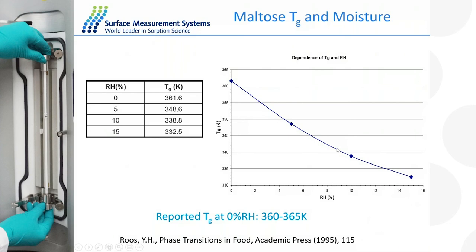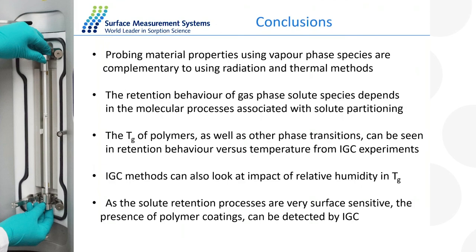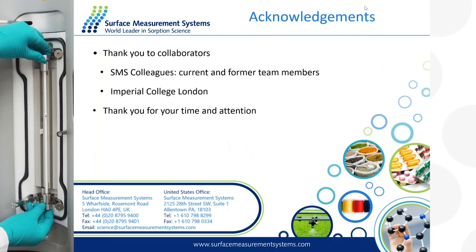In conclusion: probing material properties using a vapour phase species is complementary to using radiation and thermal techniques such as DSC or Raman. The retention behaviour of gas-phase molecules depends upon the molecular processes associated with partitioning — whether dissolving on the surface or in the bulk. The Tg of polymers as well as other phase transitions can be seen in the retention behaviour data versus temperature from IGC. IGC can also be used to look at the impact of humidity on Tg, and because solid retention processes are very surface sensitive, the presence of polymer coatings can be easily detected.